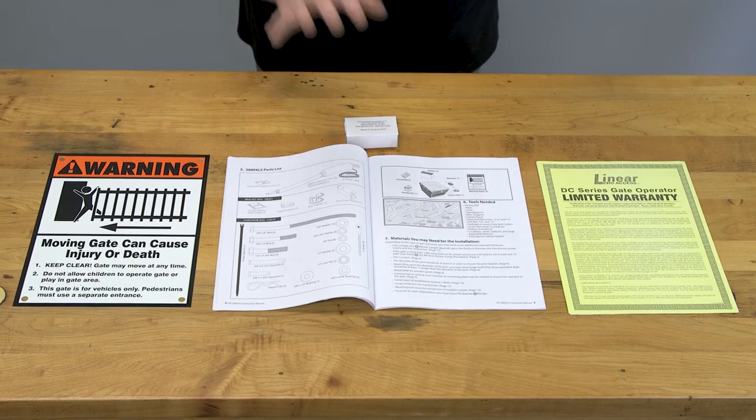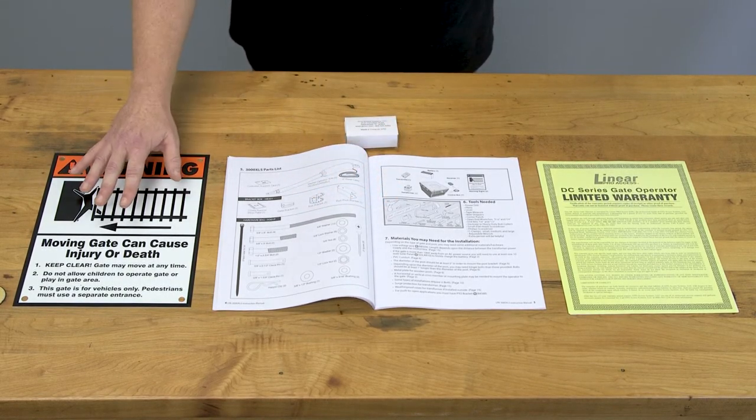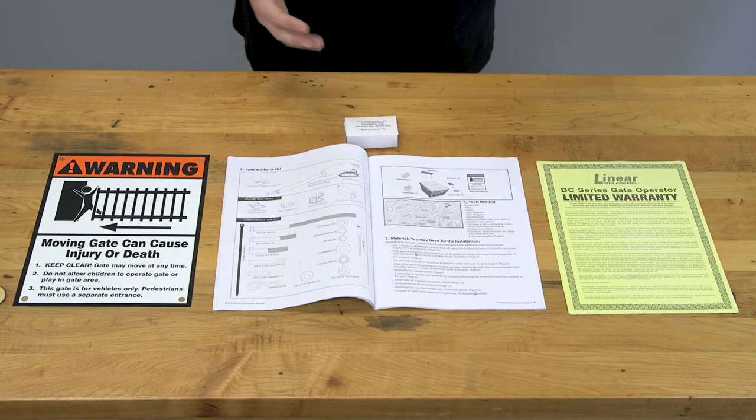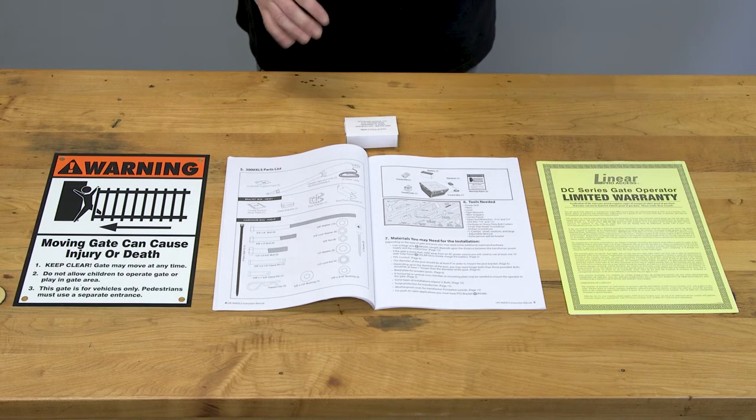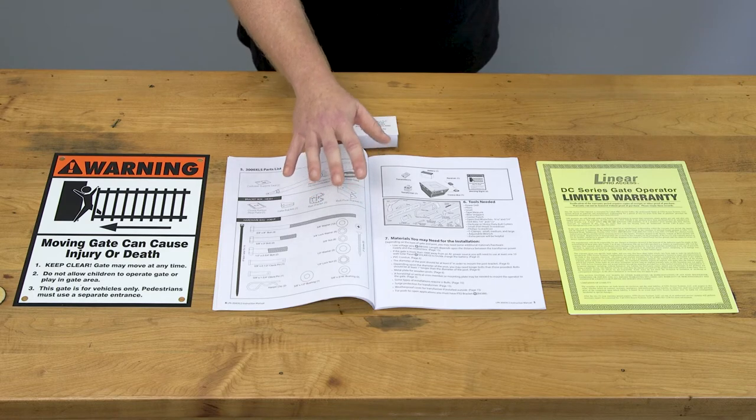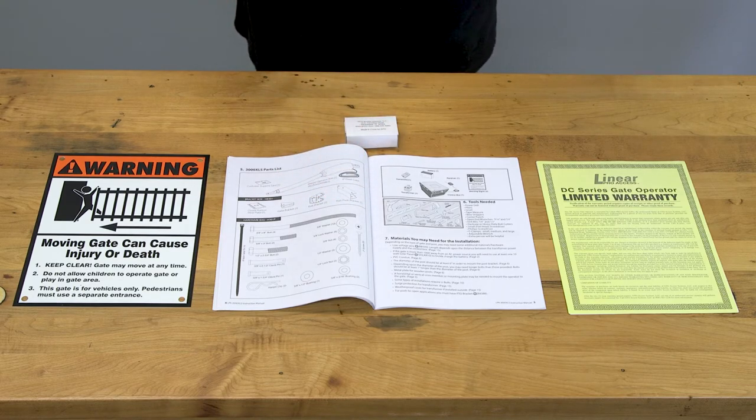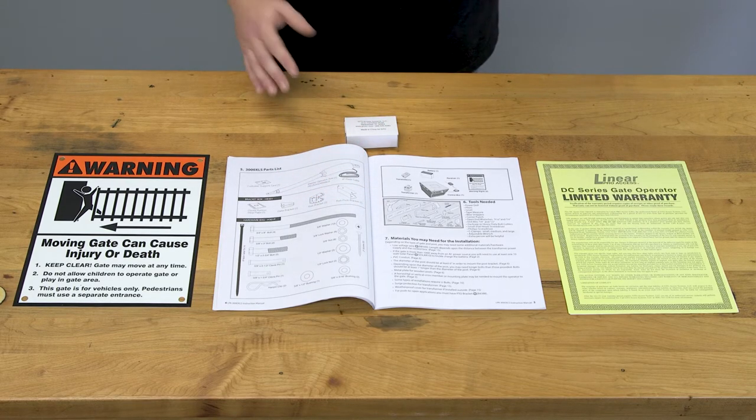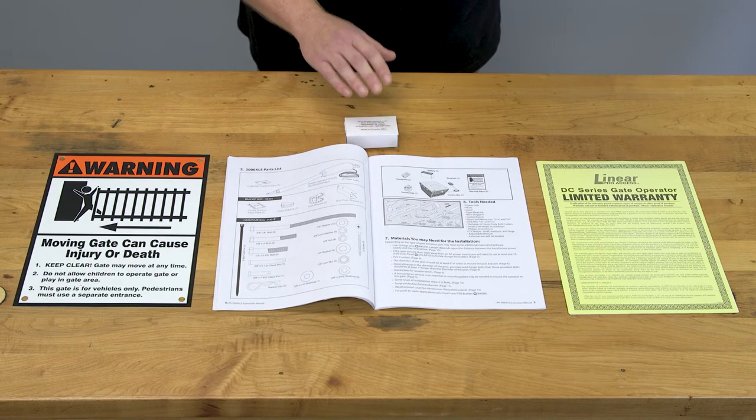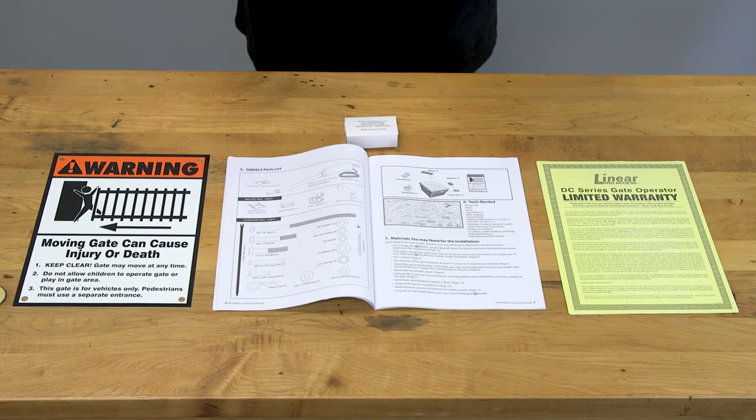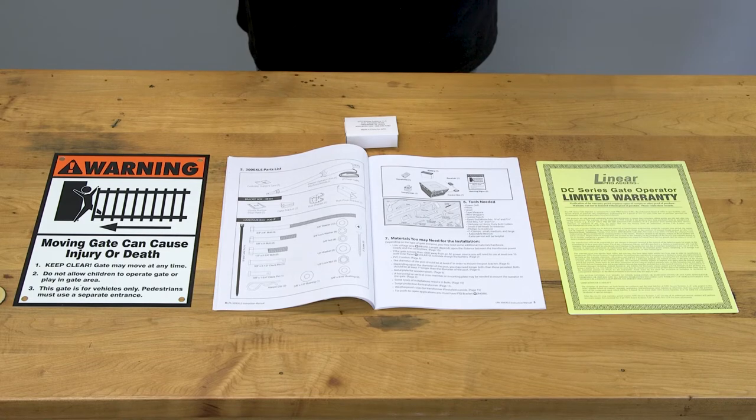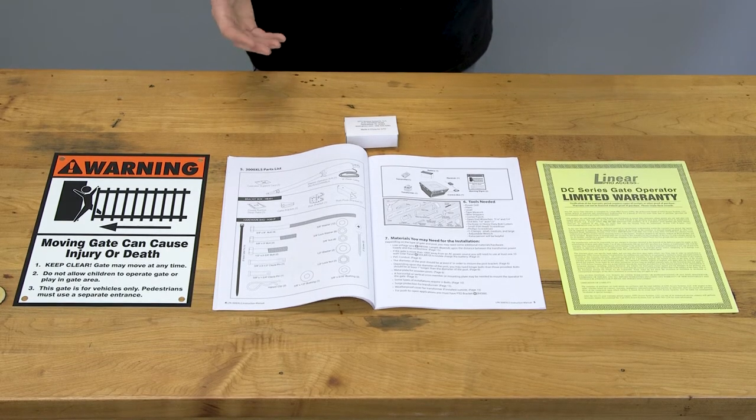Lastly, we have your install guide, warning signage, warranty information, and the transmitter for triggering the gate open and closed. The install guide is very detailed giving you all the items you'll need beyond the kit as well as clear and concise directions and illustrations. The transmitter allows you to control the gate from your house or from your car. Range will vary depending on lots of different factors such as surrounding interference, battery strength, and temperature.